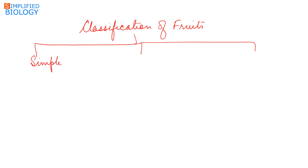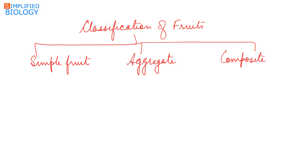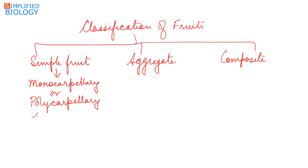Fruits can be classified into three types: simple fruit, aggregate fruit, and composite fruit. A simple fruit is formed from a monocarpellary ovary — meaning an ovary with a single carpel — or a polycarpellary syncarpous ovary, meaning many carpels that are fused. Such fruits develop from a single flower.